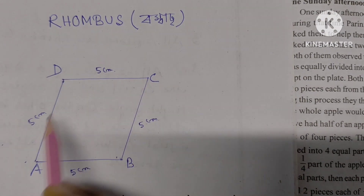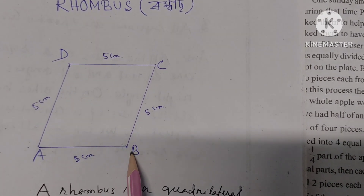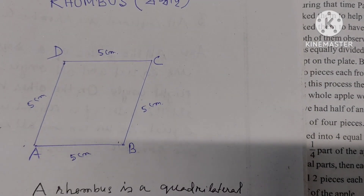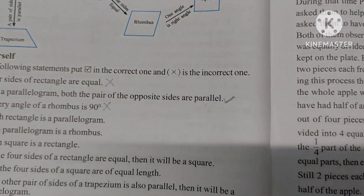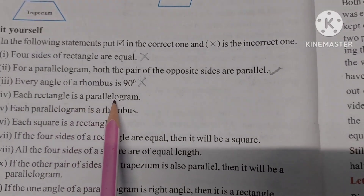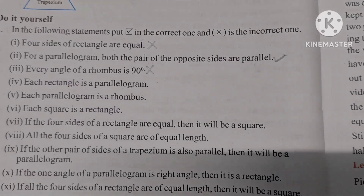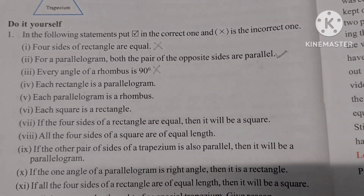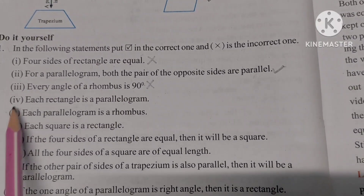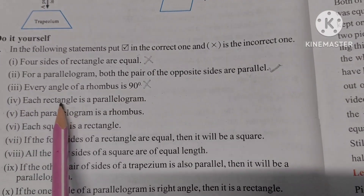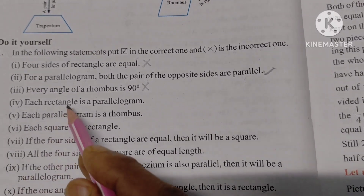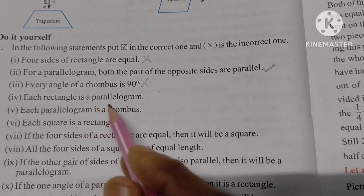Number 4: A rectangle is a parallelogram. Because in a rectangle, the opposite sides are parallel. So a rectangle satisfies the properties of a parallelogram. This statement is correct.